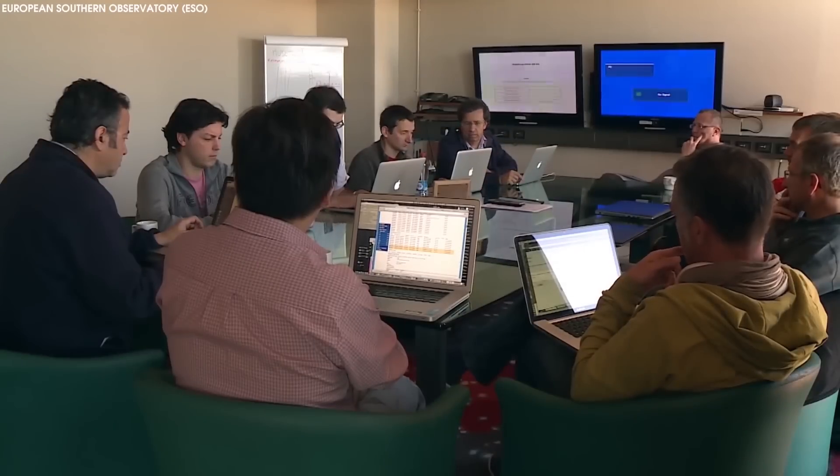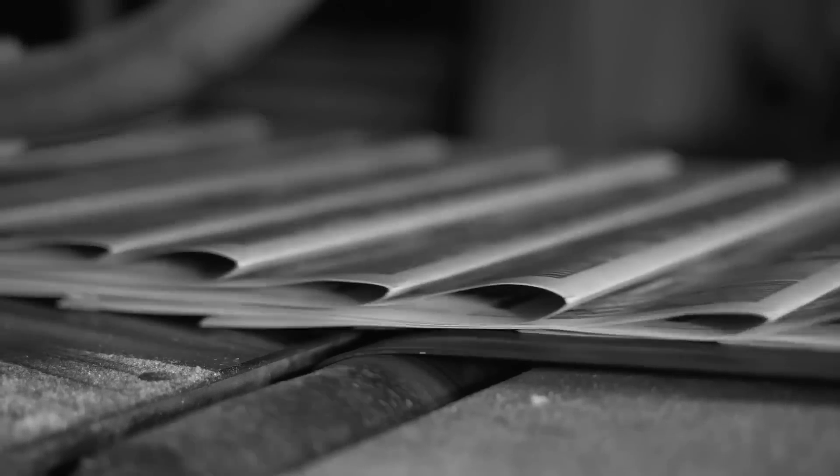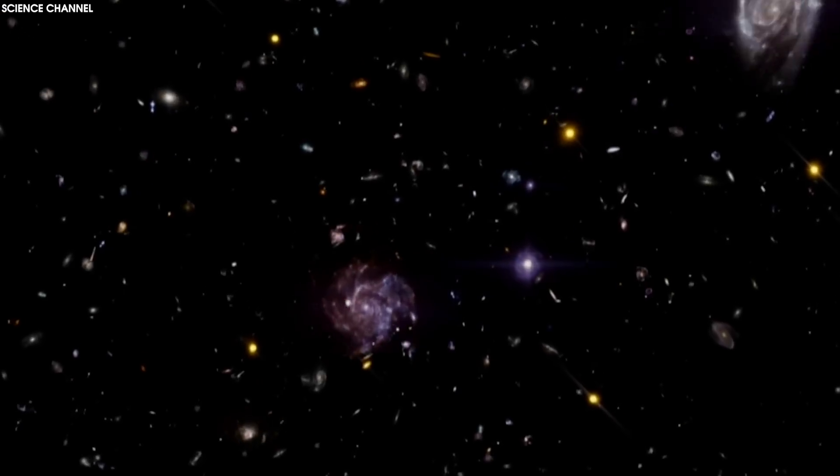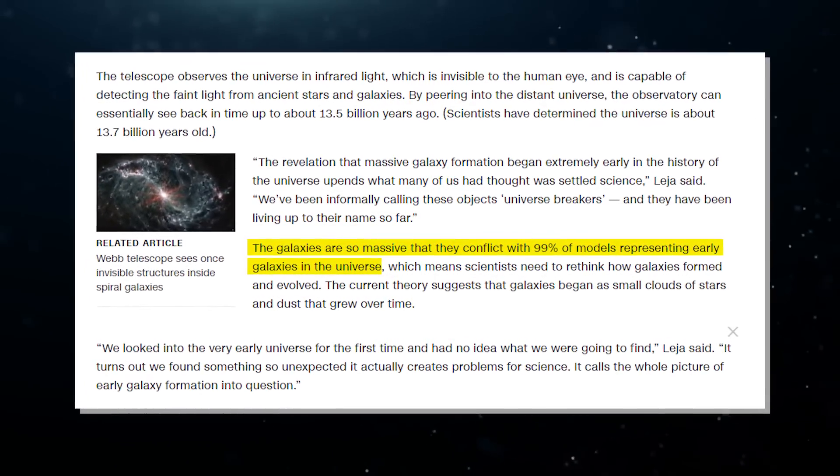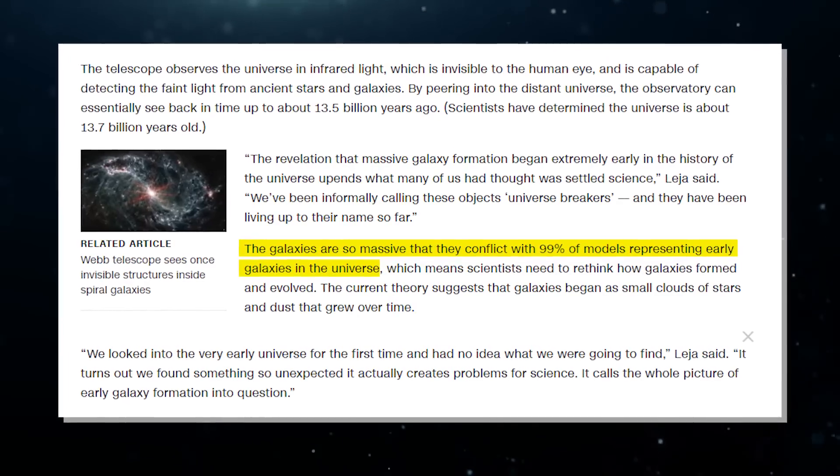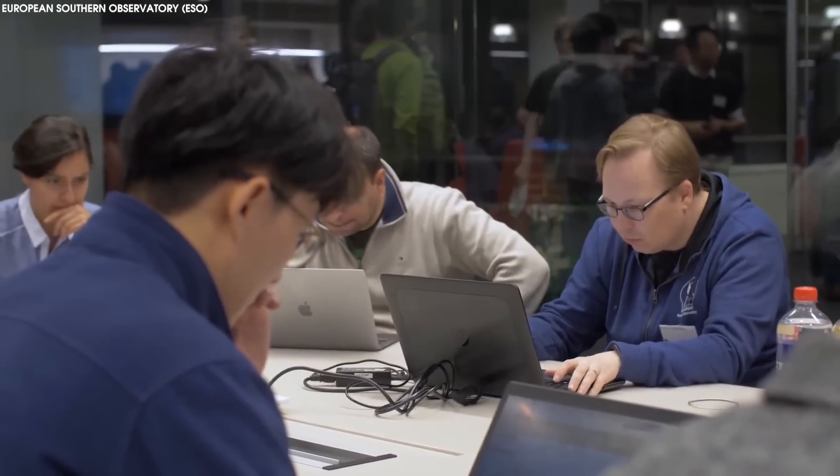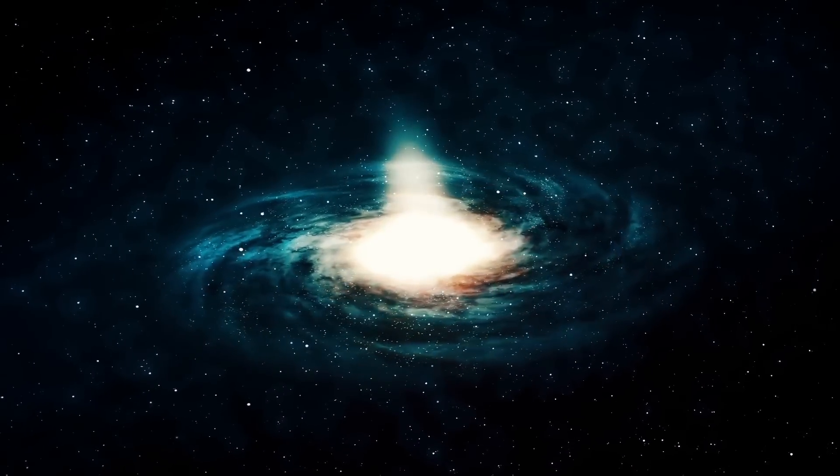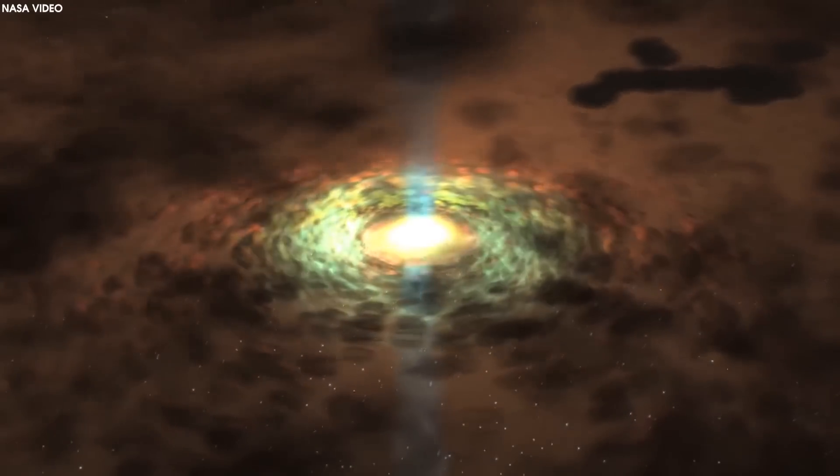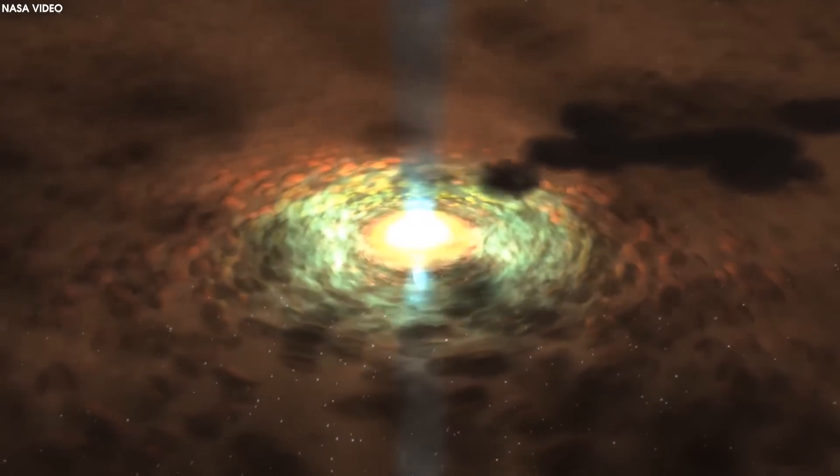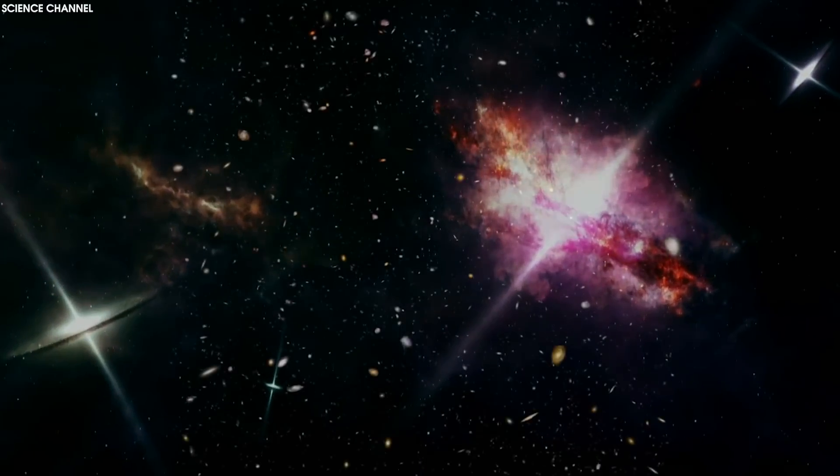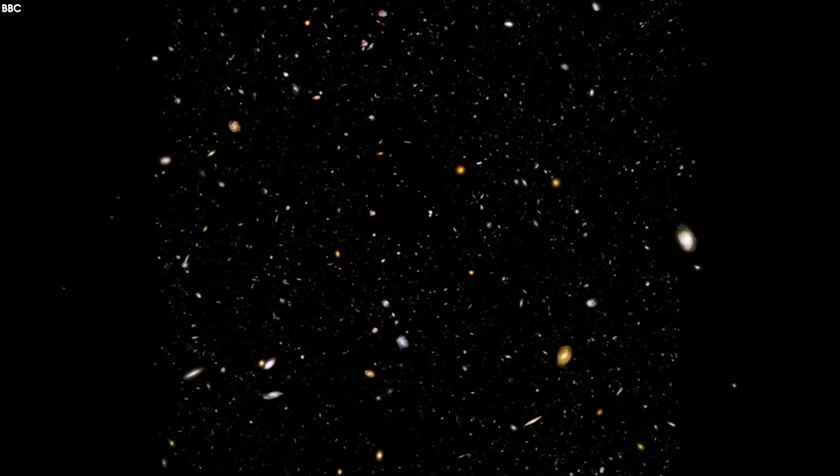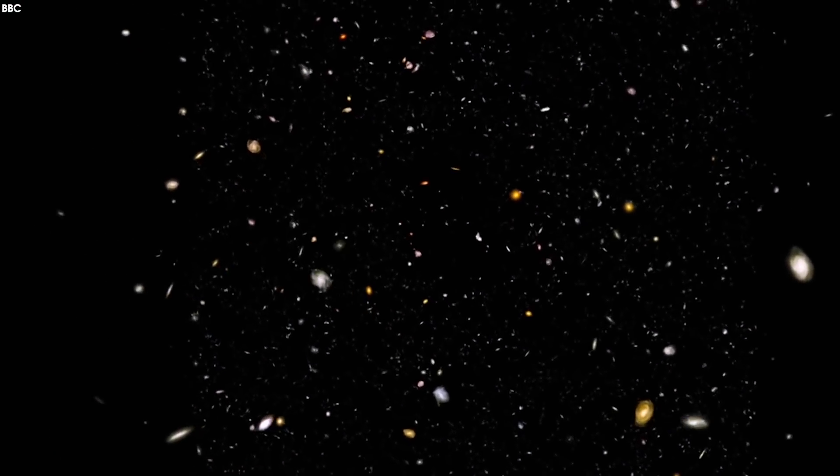According to a recent study published on February 22nd in the journal Nature, the newly discovered galaxies are so large that they contradict 99% of the representative models for early galaxies in the universe. This has left scientists utterly perplexed. The current theory suggests that galaxies begin their formation from small stellar dust clouds and gradually grow over time, but new discoveries are proving the opposite.